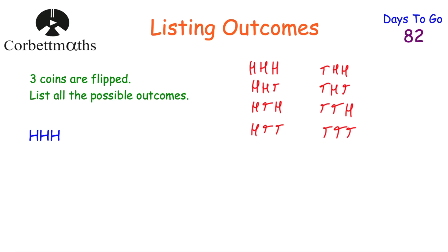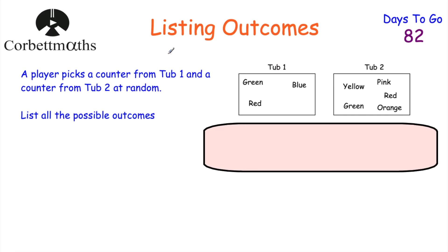Let's have a look at one last example. A player is going to pick a counter from Tub 1, which contains green, blue, and red counters, and one from Tub 2, which contains yellow, green, pink, red, and orange counters. The player picks one at random from each tub, and we've been asked to list all possible outcomes. Feel free to pause the video now.